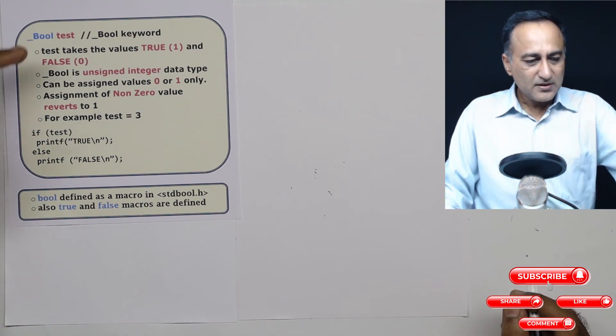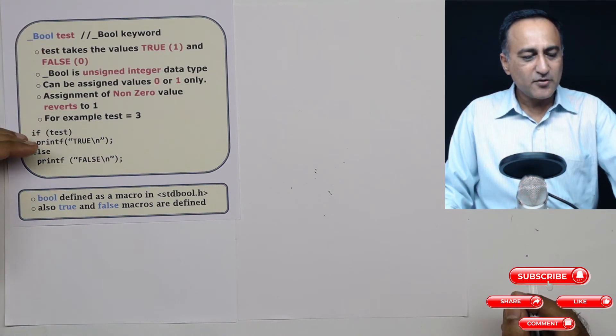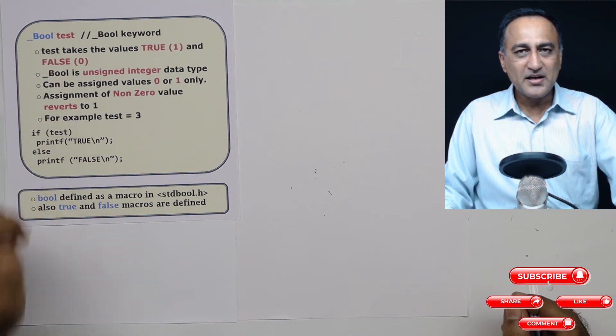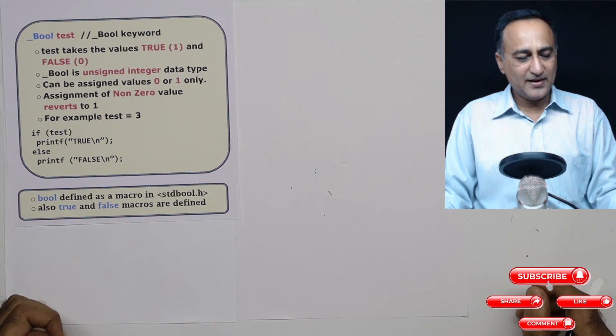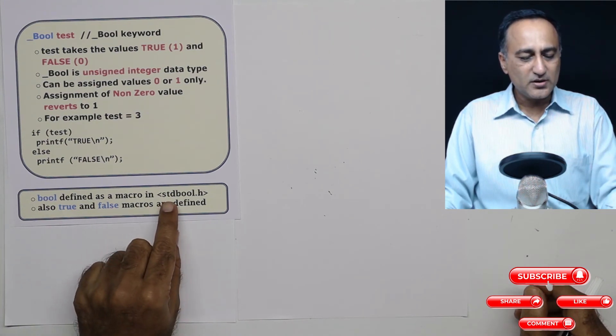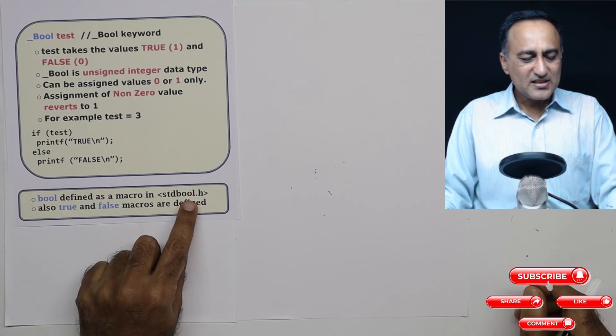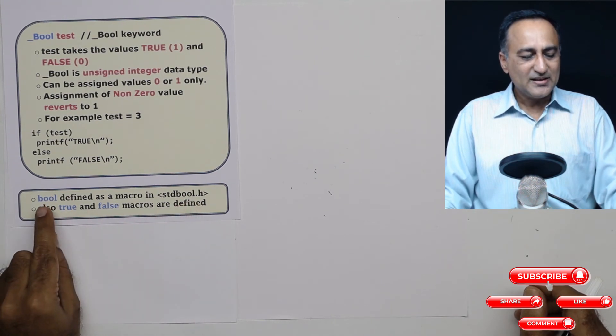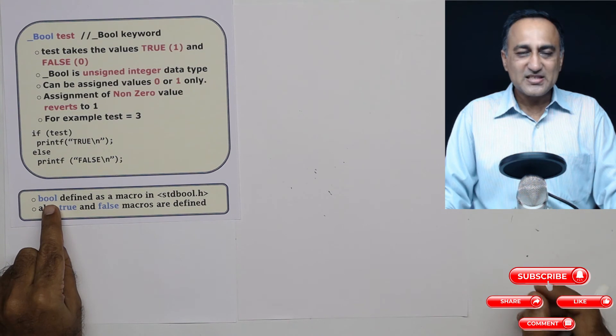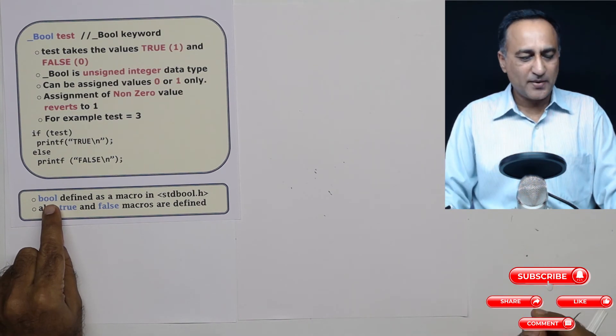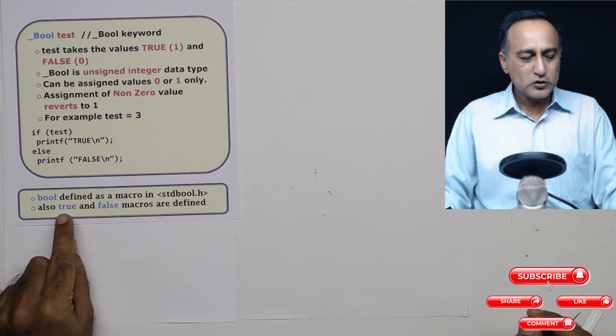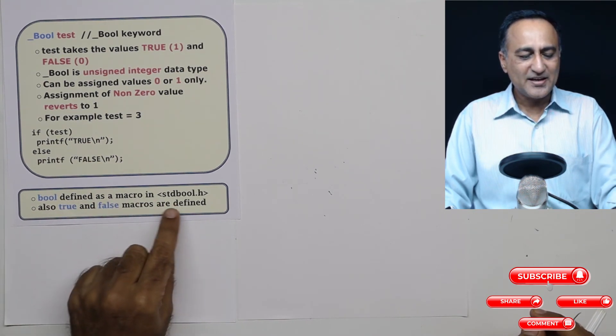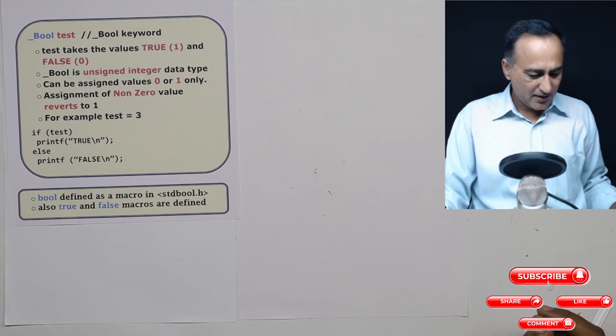Now, you can use this kind of a variable without including any header file. But if you want to use the Boolean data type including the header file, then what you will do is you will include the header file called stdbool.h. In this stdbool.h, there is a bool which is declared as a macro. For now just don't worry about what is a macro. bool is defined as something called a macro. And also true and false are defined in this standard bool.h. So this theoretical concept will be clear when we take a look at this particular example.